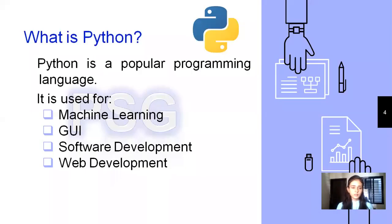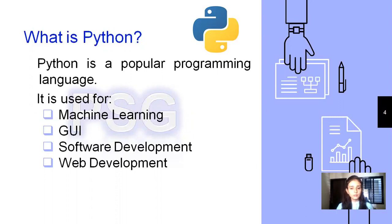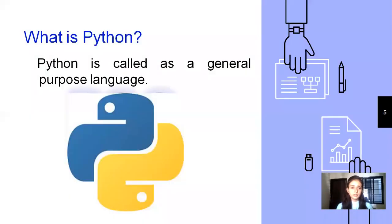Starting with: what is Python? Python is a popular programming language and it is used for machine learning, for GUI, for software development. You can also make a web based application using Python, as well as desktop based applications, and also machine learning related or data science related projects by coding in Python. That's why Python is called a general purpose language.